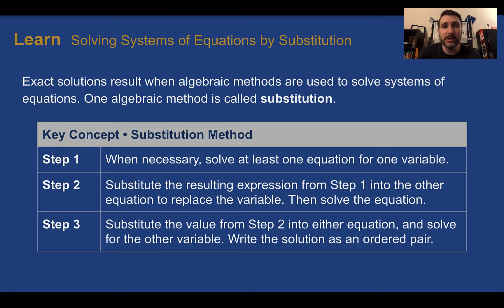So here's how the substitution method works. Step one, when necessary, we're going to solve at least one equation for one variable. Most of the time here, we'll already be solved for x or y. Step two, we're going to substitute that expression into the other equation to replace one of the variables. That's where your substitution comes in. Then we're going to solve for the variable that's left. Step three, once we figured out what x or y is, then we're going to take that value, plug it back in to either equation to solve for the other variable. Then we're going to put our x and our y values together as an ordered pair.